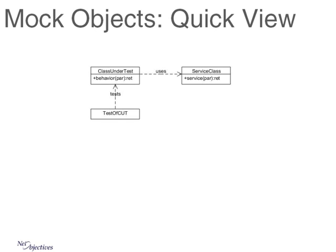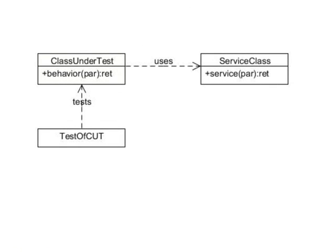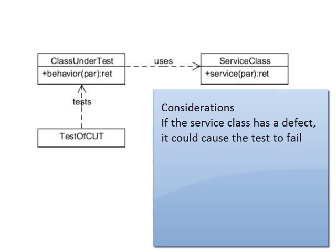First of all, I should make sure everybody knows what I'm talking about when I say a mock object. Imagine we've got this thing called class under test, and it's got some kind of behavior — I'm just calling it behavior — and we want to test that. But we know that because of the way this is designed, it's dependent upon this other class, which I'm just calling a service class. If I test the class under test with the service class in place, this causes several different problems. One is that if the service class has a defect, it could cause the test to fail, even though the thing I'm testing does not have a defect, and this could mislead me.